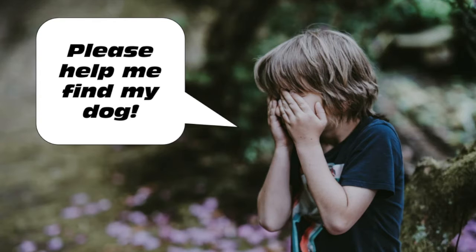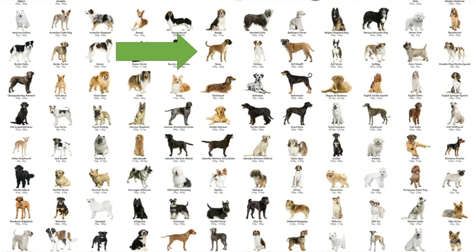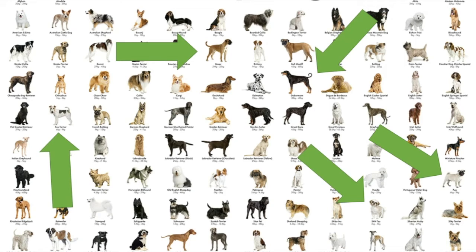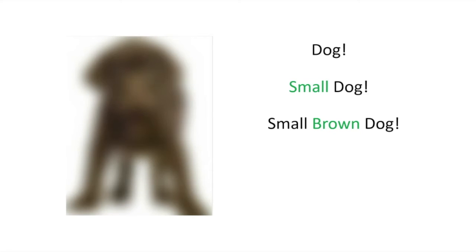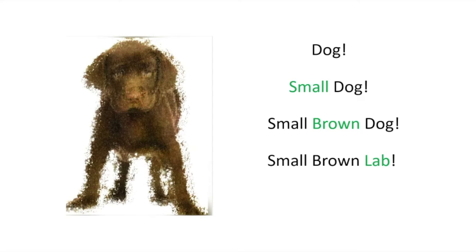Let me give an example. Suppose this is your friend and he lost his dog and he wants you to help him find the dog. You will be asking: how does your dog look? I've never seen your dog. Is it a big one, a small one? Is it a little puppy? When your friend says he needs to find a dog, there's not a lot of information. But if he tells you it's a small dog, you have more information. If he tells you it's a small brown dog, we know what color to look for. If he tells you it's a small brown lab, then we know exactly what we're looking for.